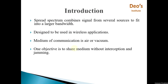Like multiplexing, Spread Spectrum also combines signals from several sources to fit into a larger bandwidth. Spread Spectrum is designed to be used in wireless applications, wireless LANs and WANs. In wireless applications, all stations use air or a vacuum as a medium for communication. Stations must be able to share this medium without interception or eavesdropping and without being subject to jamming.